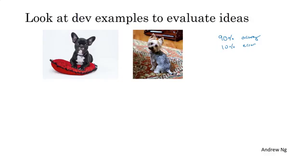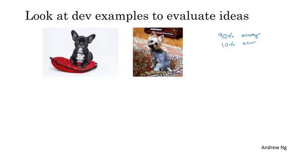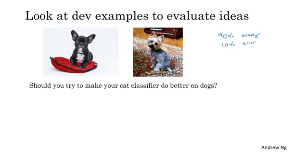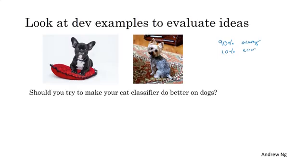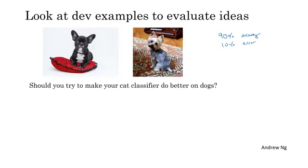And if you look at these two dogs, maybe they look a little bit like a cat, at least at first glance. So maybe a teammate comes to you with a proposal for how to make the algorithm do better specifically on dogs. You can imagine building a focused effort, maybe to collect more dog pictures or to design features specific to dogs, in order to make your cat classifier do better on dogs, so it stops misrecognizing these dogs as cats. So the question is, should you go ahead and start a project focused on the dog problem? There could be several months of work you could do in order to make your algorithm make fewer mistakes on dog pictures. So is that worth your effort?